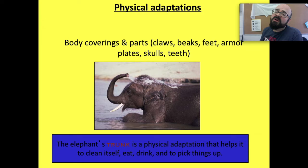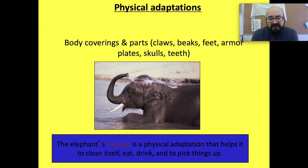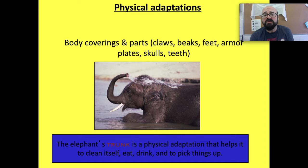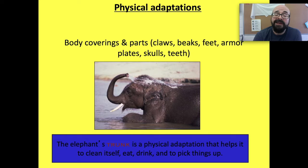Another physical adaptation is body coverings and parts, which includes claws, beaks, feet, armor plates, skulls, and teeth. The elephant's trunk is a physical adaptation that helps it clean itself, eat, drink, and pick things up. For claws, think of wolverines or lions. For beaks, look at predator birds like the eagle — their beaks are generally curved for tearing flesh, which is a great physical adaptation for finding and killing their own food.